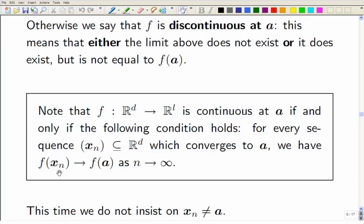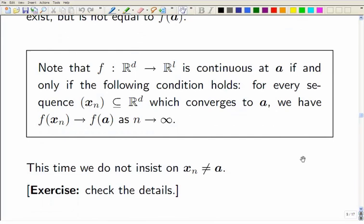As long as for every sequence in R to the d which converges to A, when you look at the sequence of values f of X1, f of X2, f of X3, that's got to tend to f of A as n tends to infinity. If that works, then you're continuous at that point.